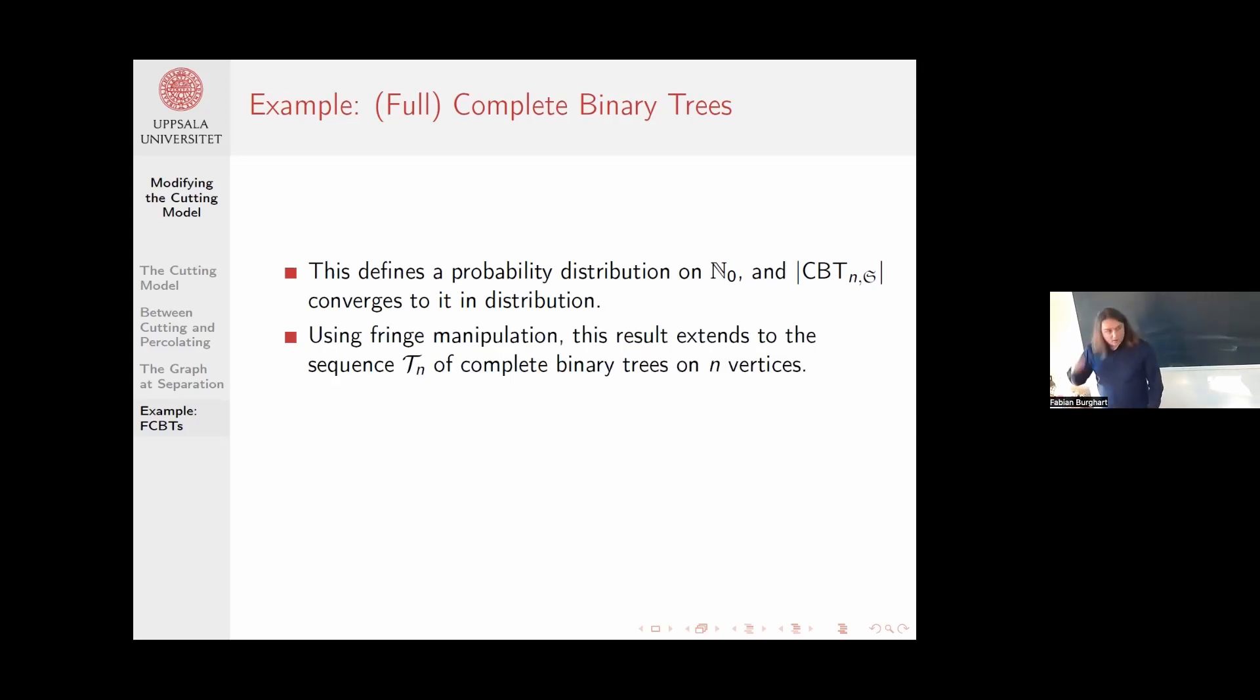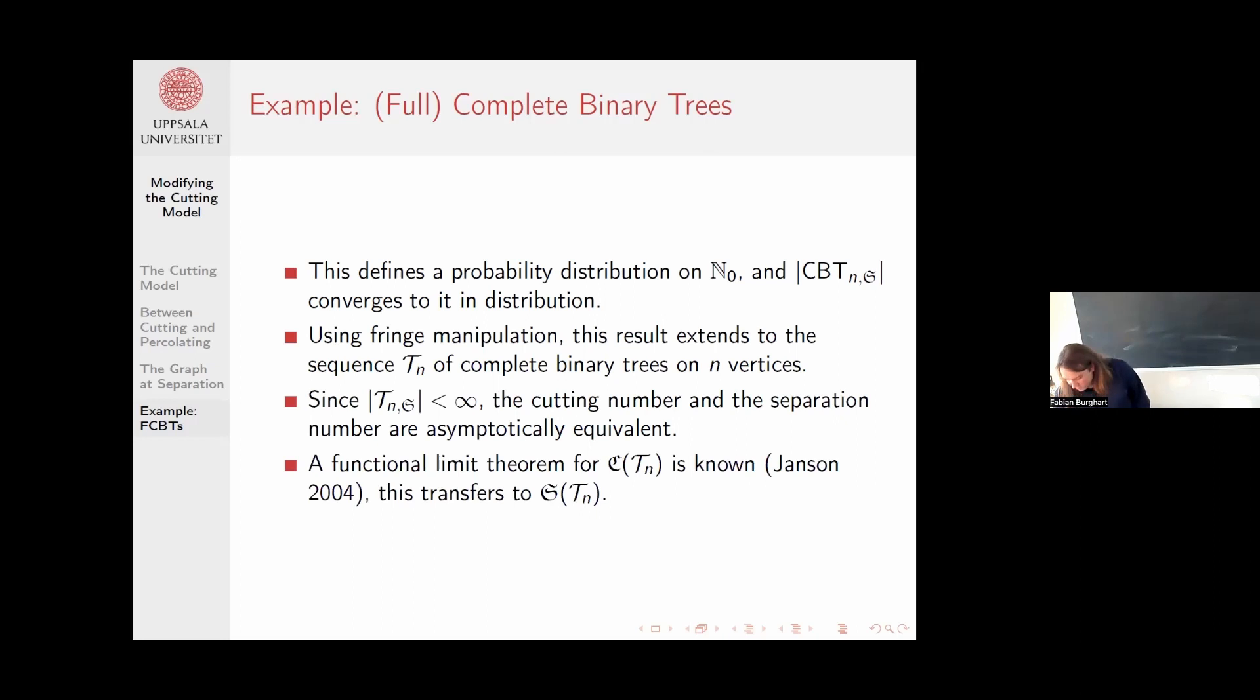In fact, with some technical work, you can extend this to complete binary trees on N vertices. Then because we know the trees at separation are small, we have asymptotic equivalence between the separation number and the cutting number. It turns out that thankfully Devroye figured out the limiting distribution for the cutting number, so we can simply copy paste that result to separation.